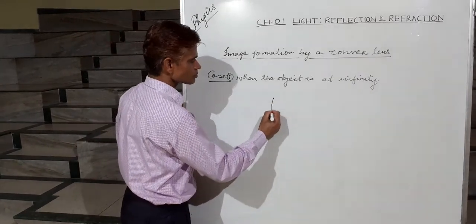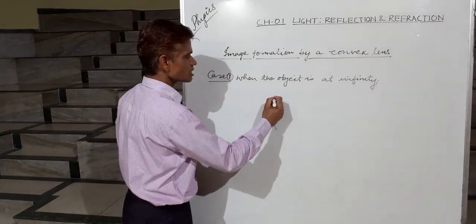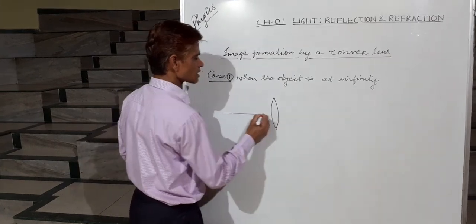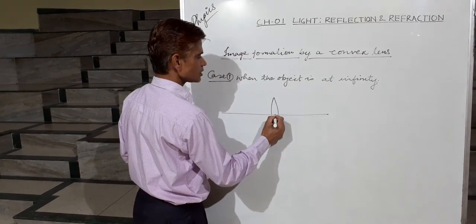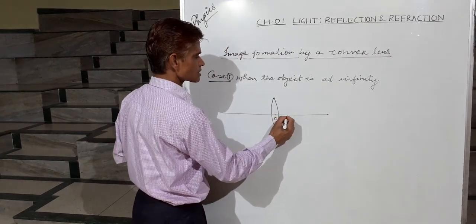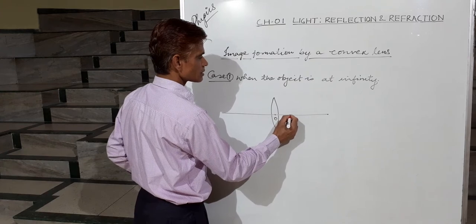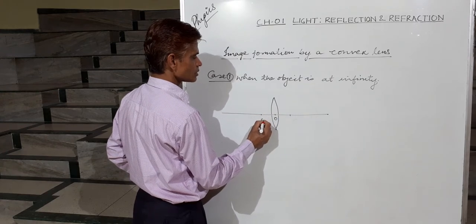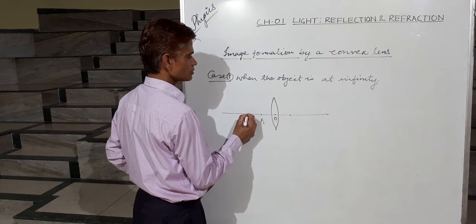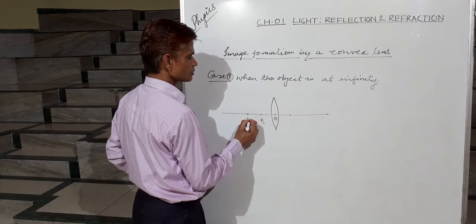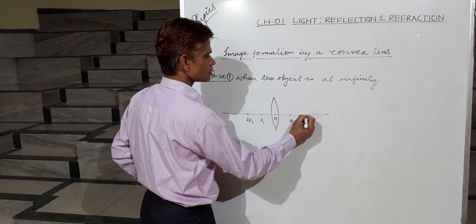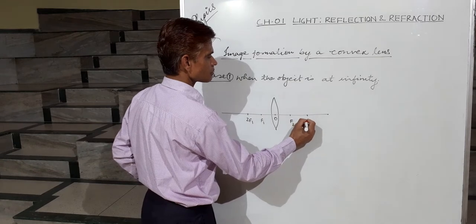Let us see where the image is formed. This is the convex lens, with the optical center, F1, 2F1, F2, and 2F2 marked.